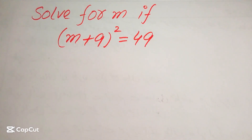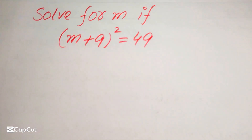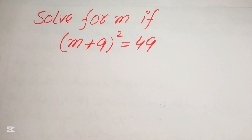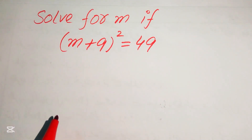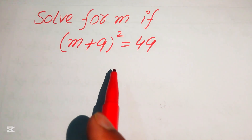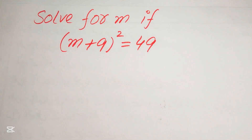Hello everyone, welcome to solve this nice math Olympiad algebra problem. Here we have (m + 9)² = 49 and we solve this problem for the values of m.